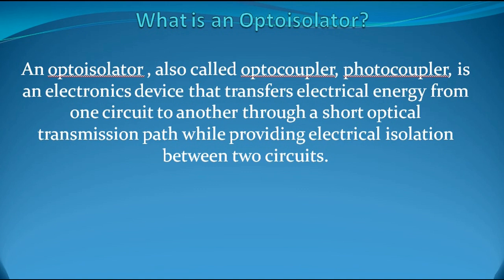An opto-isolator, also called opto-coupler or photocoupler, is an electronic device that transfers electrical energy from one circuit to another through a short optical transmission path, while providing electrical isolation between the two circuits. You can also say an opto-isolator or opto-coupler couples high voltages from one side of the circuit to the other without any electrical contact.